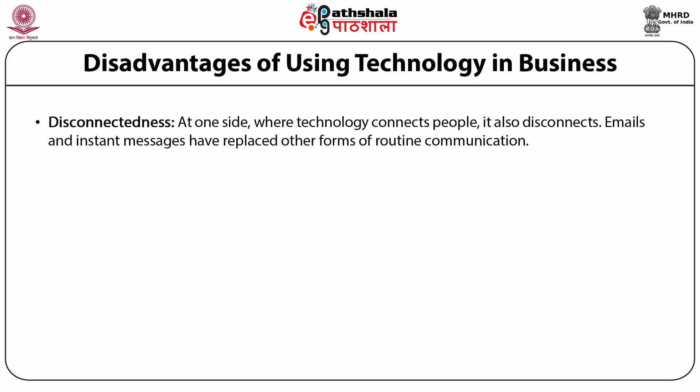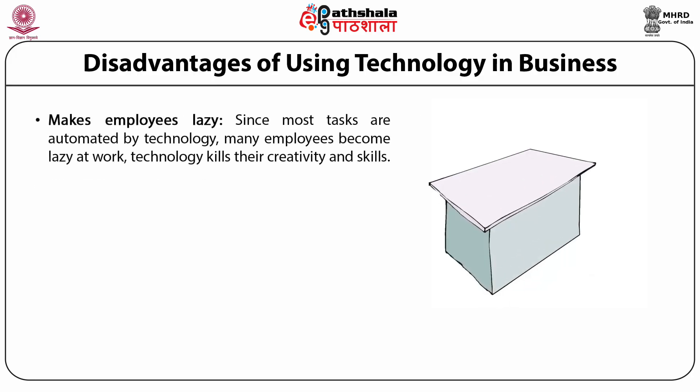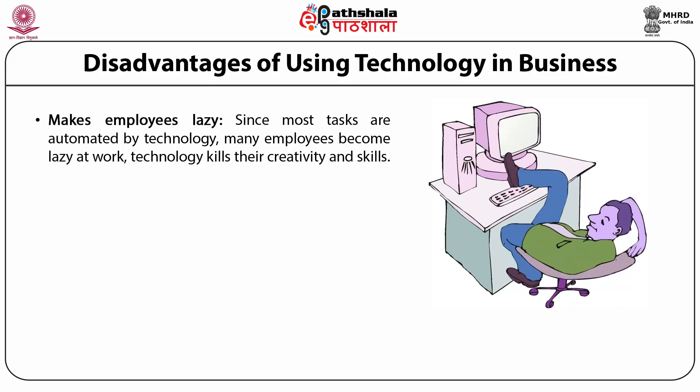Disconnectedness. Where technology connects people, it also disconnects. Email and instant messages have replaced other forms of routine communication. A problem with such forms of communication is that they lack personal touch. Due to less face-to-face communication, cordial relations among employees do not develop so easily. But venues such as video conferencing eliminate such communication obstacles. Fourth is distractions. System failures are often a problem when using technology. Emails and instant messages also interrupt work. There are other forms of distractions from work such as online games, music and videos. Fifth, technology makes employees lazy. Since most tasks are automated by technology, many employees become lazy at work. Technology kills their creativity and skills.